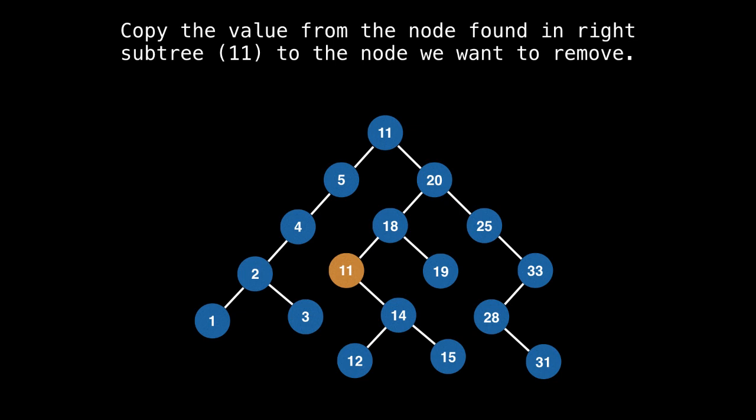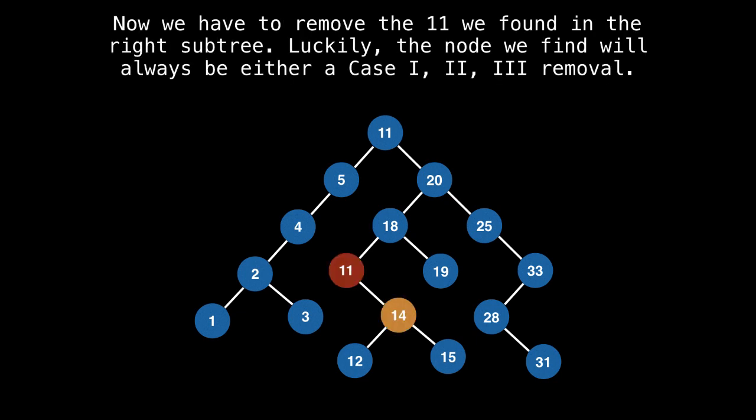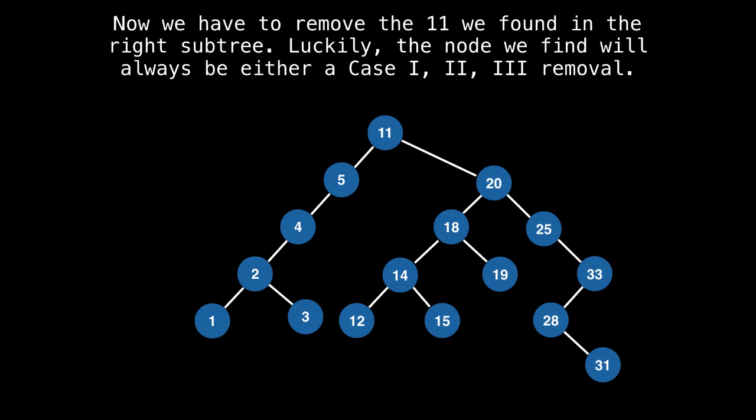Notice that now there are two instances of 11 in our tree, and we want unique values in our tree. So to remove the 11 that is currently highlighted, we would recursively call our remove method, but on 11 this time. Luckily for us, this will always result in a case one, two, or three removal. To remove 11, we notice that it only has a right subtree, so its successor is its immediate right child. We stage the removal and get ready to remove 11, then we remove 11 and hook 14 back up to 18. If we rebalance the tree, we can see that the duplicate 11 value is gone.